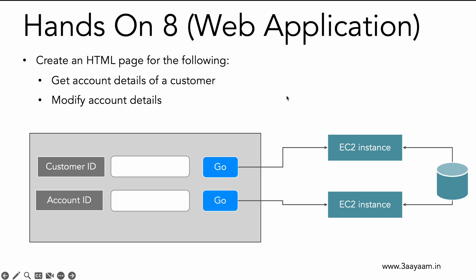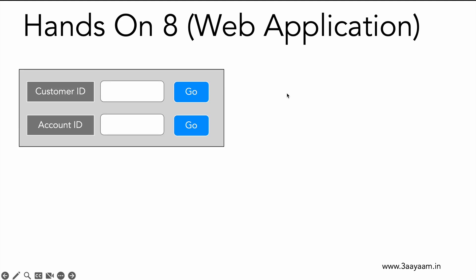The page has a customer ID field, an empty box, and a Go button. Likewise, we have an account ID, an empty box, and a Go button. I'll take the example of only one of them — both would be more or less similar. In the empty box, the variable value will be entered: customer ID is one variable, and we'll put the value of customer ID there.